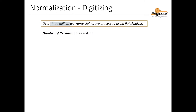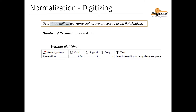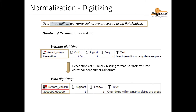The final normalization option is digitizing. This post processor comes in handy for things like a number written out in the text. Without digitizing, the number 3 million is captured in words as it appears in the text. But once we use the digitizing post processor, descriptions of numbers are converted to their corresponding numeric form, so the output is returned as a number.